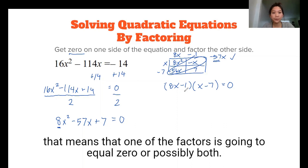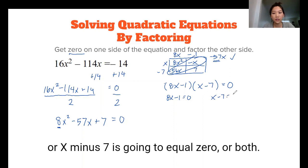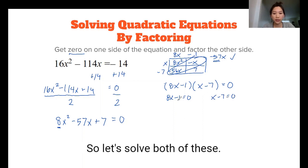So that means that either 8x minus 1 is going to equal 0 or x minus 7 is going to equal 0 or both. So let's solve both of these.